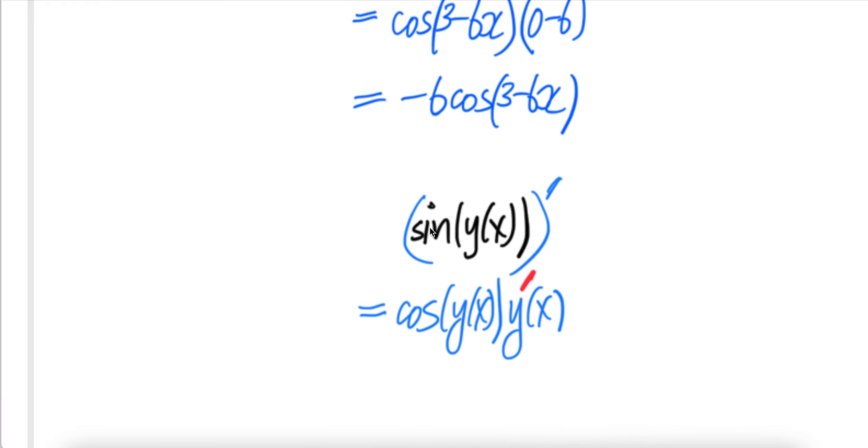The derivative of this is, the derivative of sine y to power x, y of x, function of y of x is, derivative of sine is cos of the same thing here, times the derivative is y prime. We're applying the chain rule.